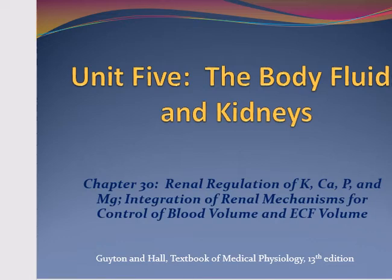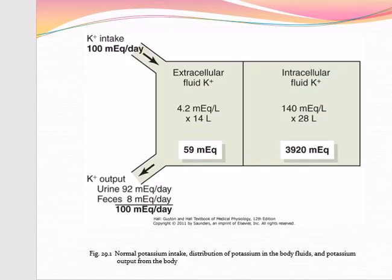Today we will discuss in detail the regulation of extracellular fluid potassium concentration and the potassium excretion or secretion. Extracellular fluid potassium concentration is normally regulated at about 4.2 milliequivalent. Its control is necessary because many cell functions are sensitive to changes in extracellular fluid potassium concentration. For instance, an increase in plasma potassium concentration of only 3 to 4 milliequivalent can cause cardiac arrhythmias, and higher concentrations can lead to cardiac arrest or fibrillation.